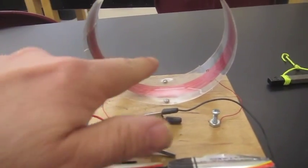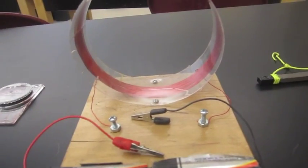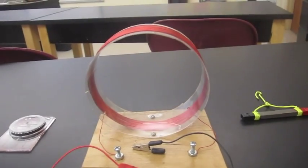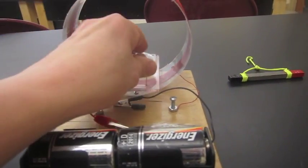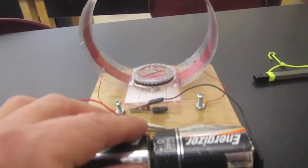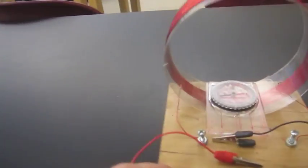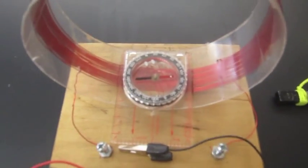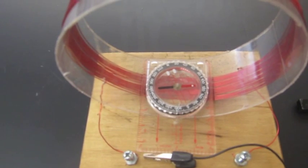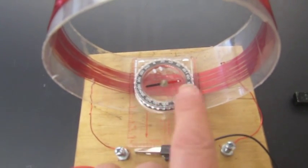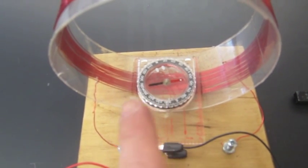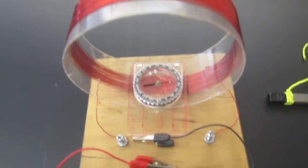Now inside then whenever it's connected we would get a magnetic field. So to show that we can take a compass and if we look very closely I'm turning it slightly so that the compass needle is directly parallel with the coil of wire.